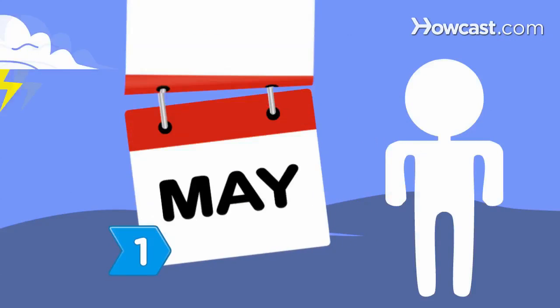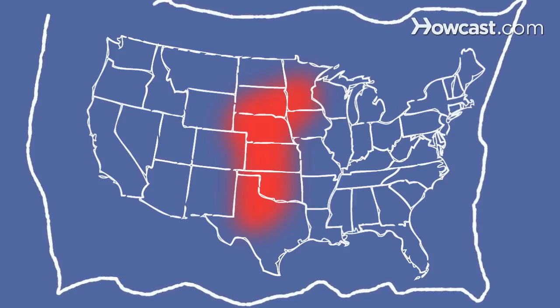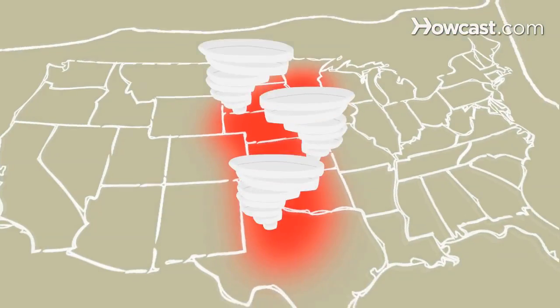Step 1. Between April and June, head to a location in Tornado Alley, a swath of land in the central U.S. known for its active storm season.